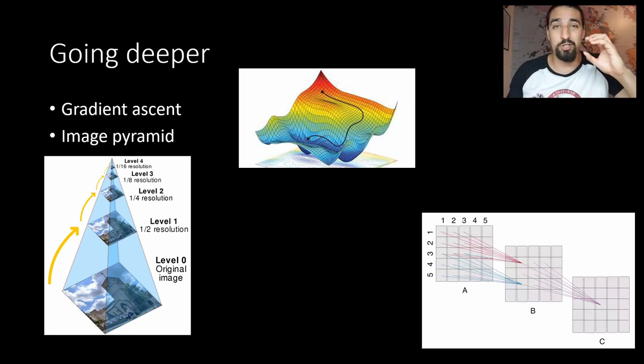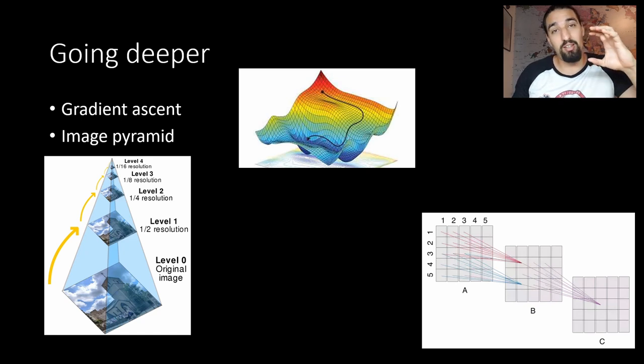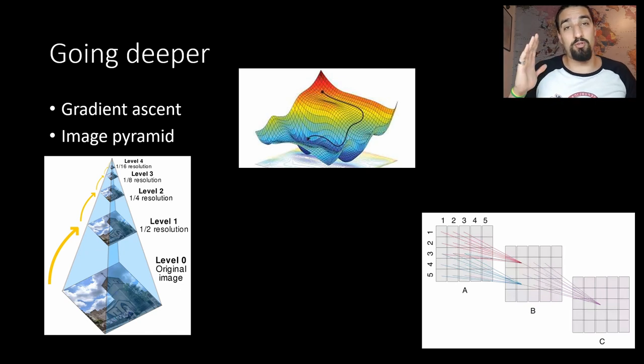So the algorithm proceeds like this: you just start with the smallest resolution, you do the DeepDream, then you just upsample the image, then again you do the DeepDream and then again and again until you get to the base image of the pyramid, the biggest resolution, and you just stop.